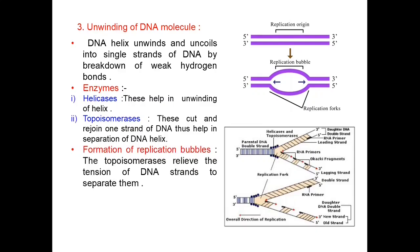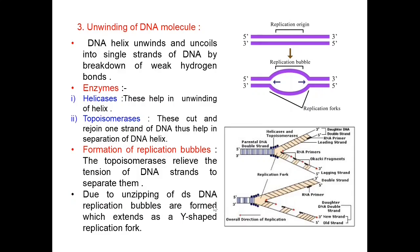Formation of replication bubbles can be explained as follows: if two highly intertwined ropes are pulled apart, their strands automatically intertwine again as soon as the force is stopped. But if one intertwined rope is cut, the tension is relieved and the two strands fail to come together. Similarly, topoisomerases relieve the tension of DNA strands to separate them. Due to unzipping of the double-stranded DNA, replication bubbles are formed, which extend as Y-shaped replication forks.